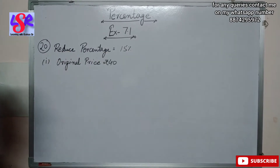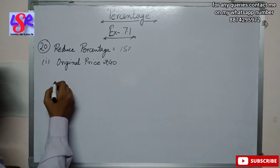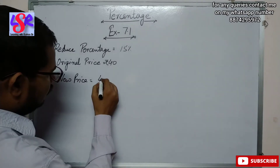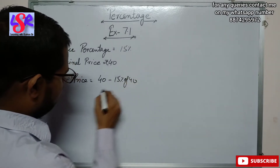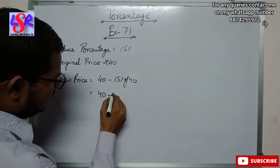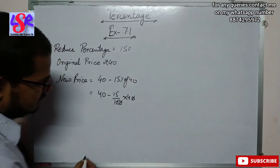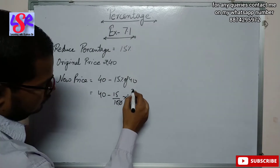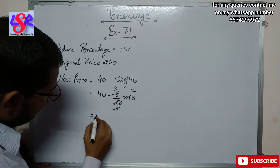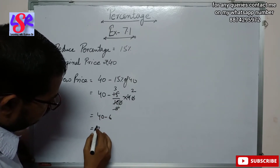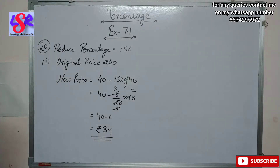Here the reduced percentage is 15% and the original price is rupees 40. We have to find the new price. So new price is 40 minus 15% of 40, that is 40 minus 15 upon 100 into 40. The zeros cancel out and we get 40 minus 6, that is equals to rupees 34. So 34 is the new price for this article.